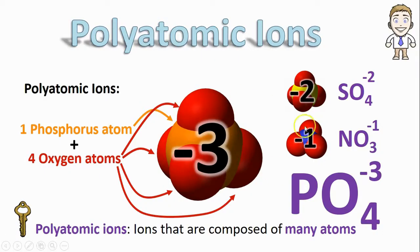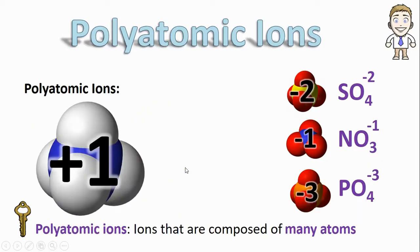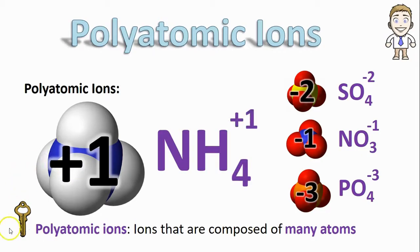Now you might notice that all of these examples have negative charges. They're all anions and that's true for most polyatomic ions, but it's worth mentioning that some can be positive too. This particular example is an NH4 and it has a positive one charge.